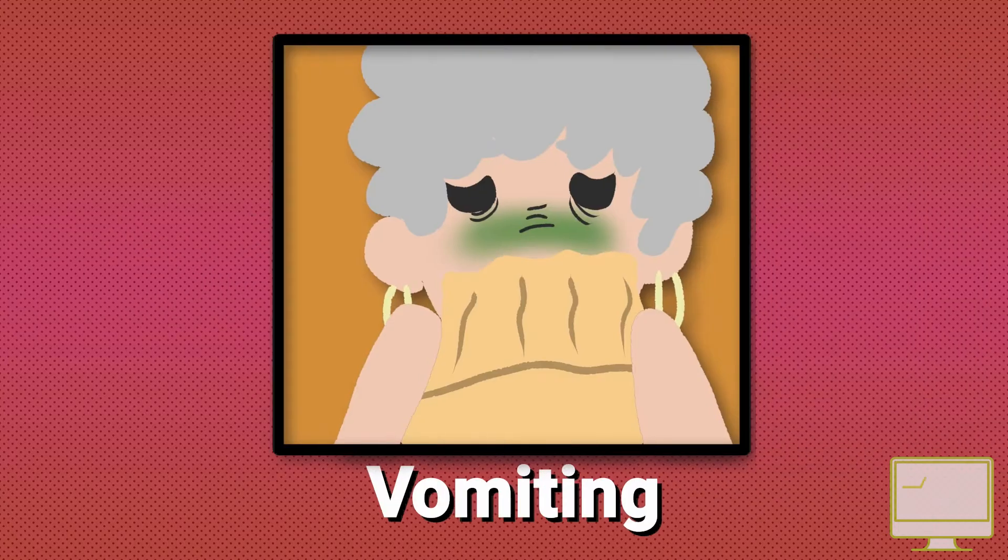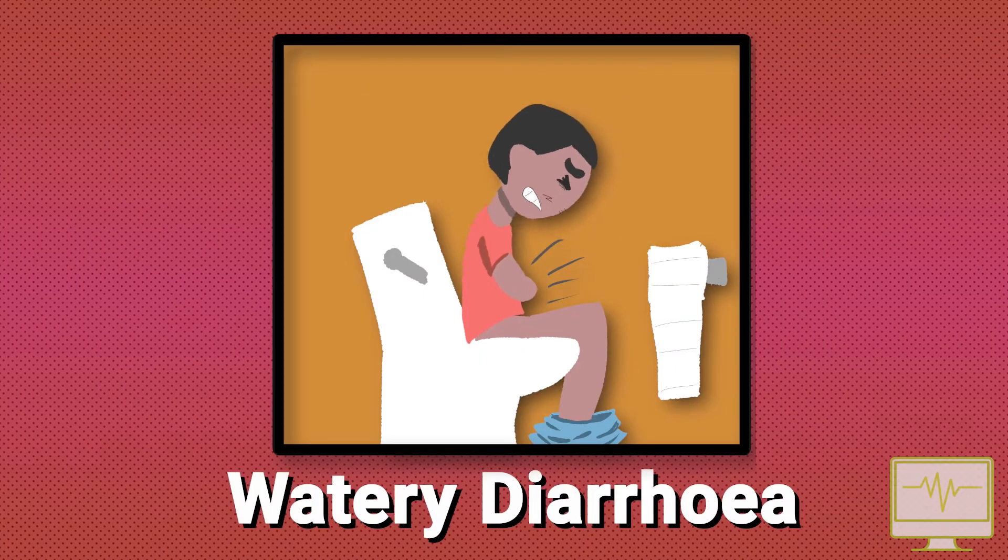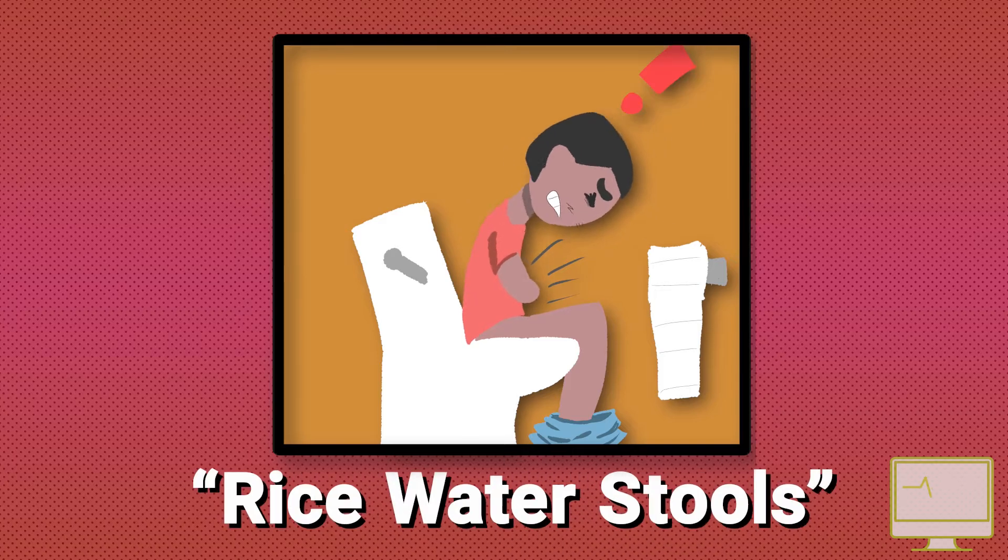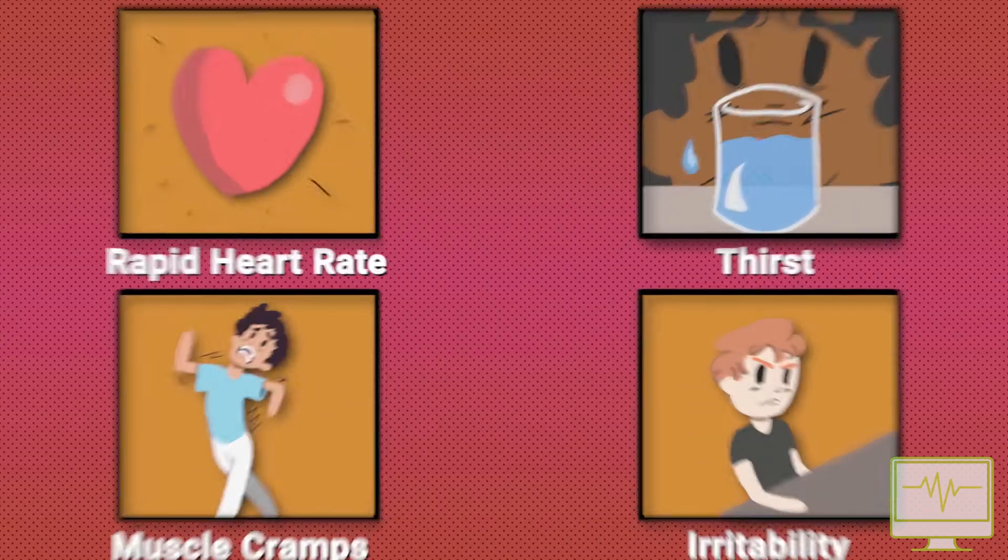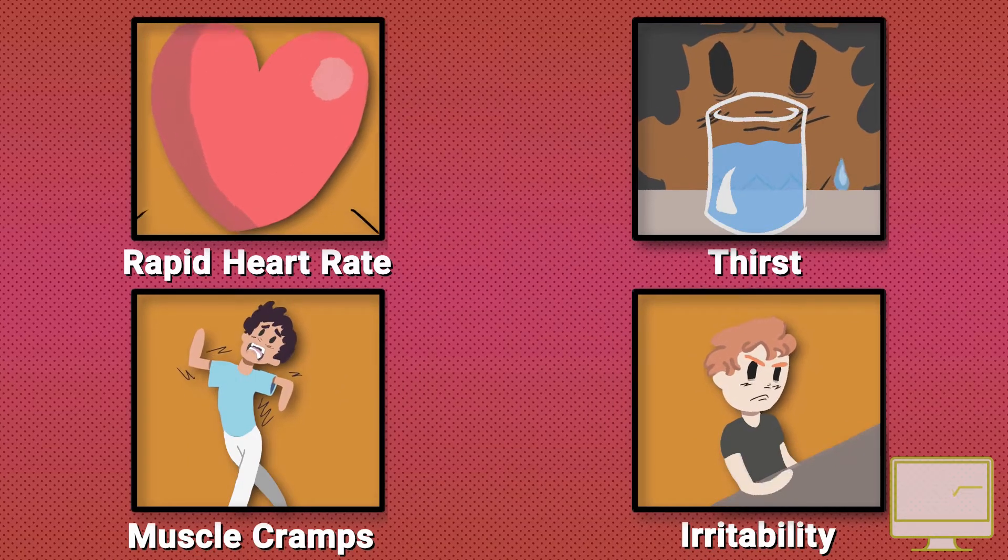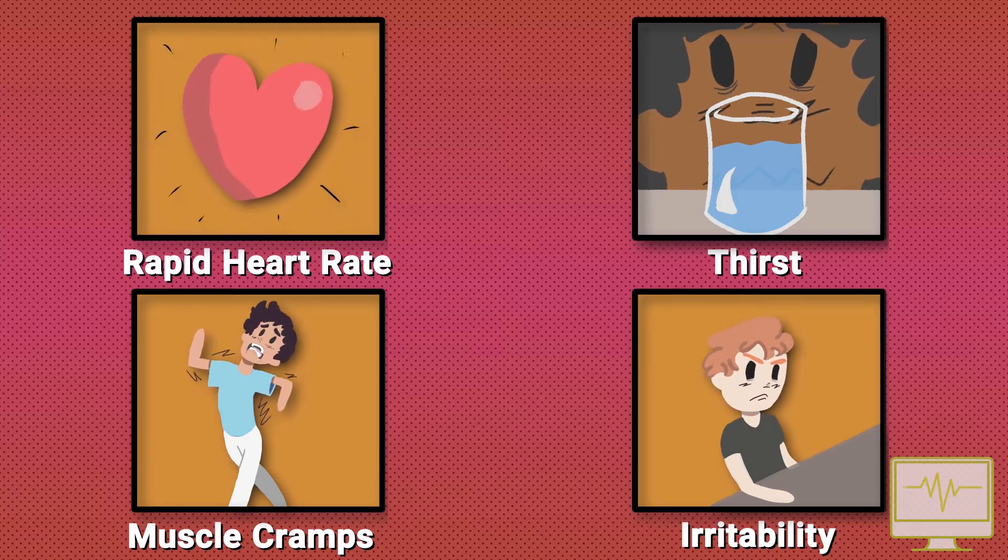Early signs and symptoms of severe Cholera include vomiting and profuse watery diarrhoea, sometimes described as rice water stools. This causes significant dehydration which can present as rapid heart rate, thirst, muscle cramps and restlessness or irritability.